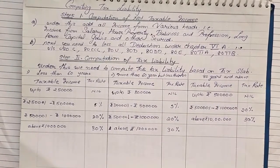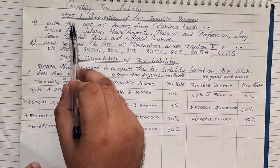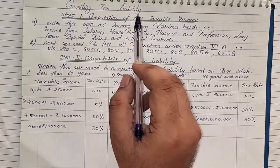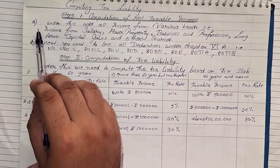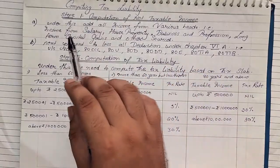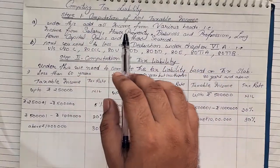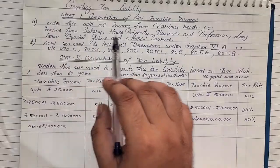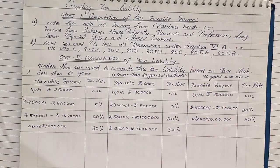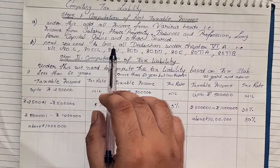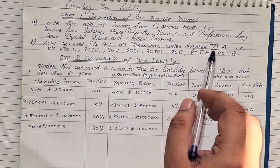There are two steps to follow. Step one: we need to first compute the net taxable income. Under this there are two parts — first, add all income from various heads: income from salary, house property, business and profession, long-term capital gain, and other sources. Next, deduct all deductions under Chapter 6A.